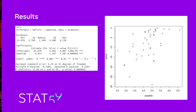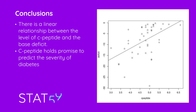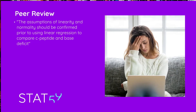A cursory look at this data shows that there is some type of relationship where as C-peptide gets higher the base deficit seems to get greater. She's plotted the regression line and her conclusion is that there is a linear relationship between the level of C-peptide and the base deficit, and that C-peptide holds promise to predict the severity of diabetes. At this point she submits her article to a journal and gets back this peer review comment: the assumptions of linearity and normality should be confirmed prior to using linear regression to compare C-peptide and base deficit.